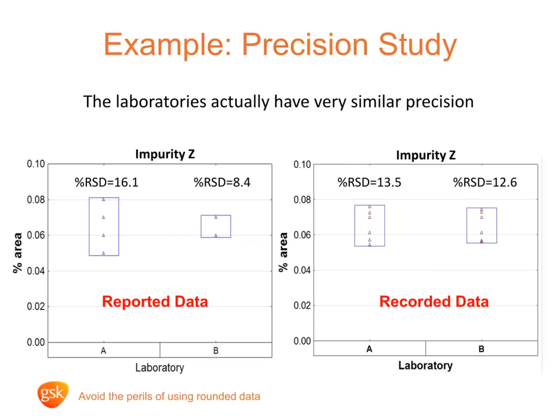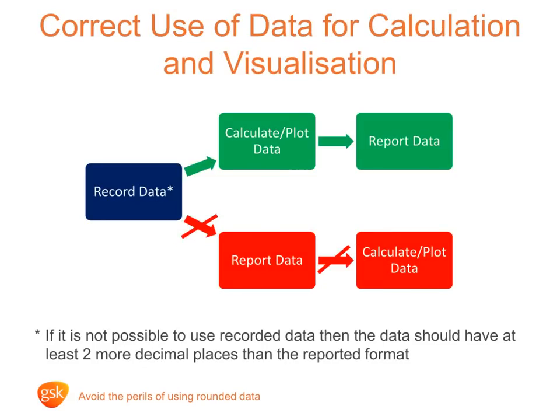In our work we've observed people using rounded data and seen the problems this causes. Our paper discusses some of the reasons why people do this and how to address those. Always do your calculations and plotting on recorded data, not reported data. If it is difficult to obtain recorded data, we recommend the rule of thumb of ensuring you have at least two more decimal places in your data than the reported format of the final result, which will give similar results to the recorded data.